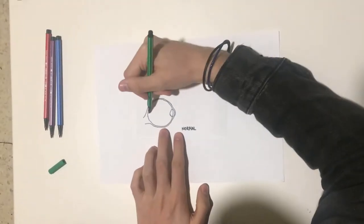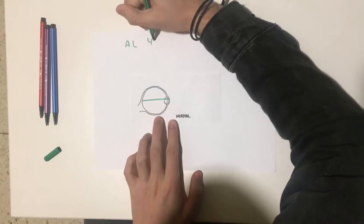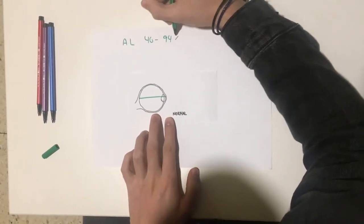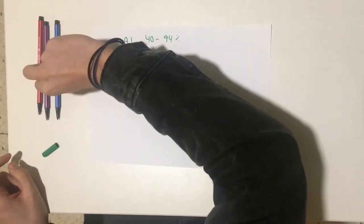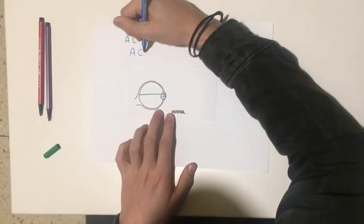Refraction is determined by ocular biometric components such as axial length, anterior chamber depth, corneal curvature, and lens thickness. There is a relationship of axial length to refraction. The longer the eye, the more myopic the refractive error.